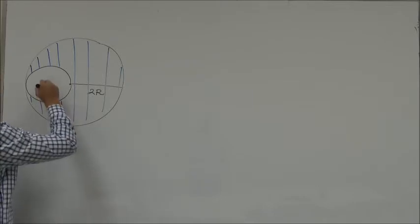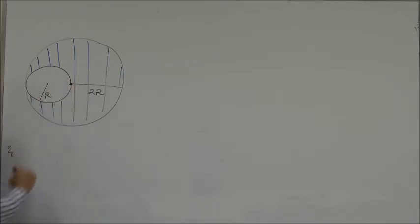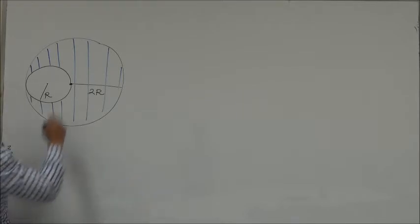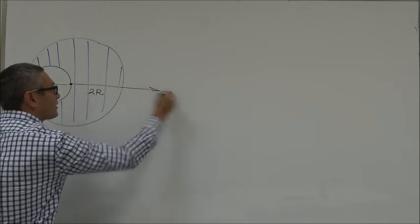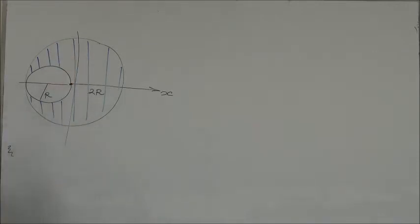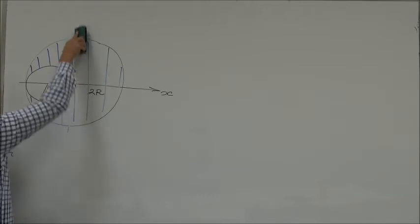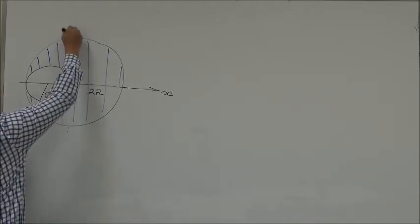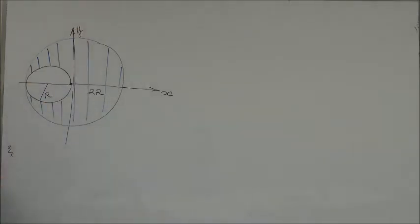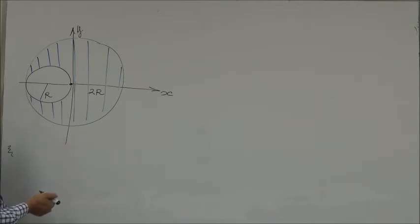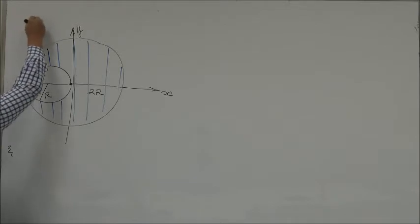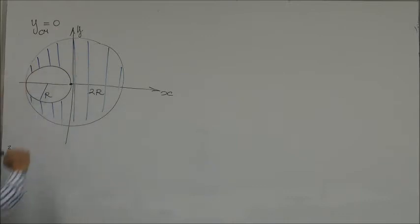The radius of the big circle is 2R, and the radius of the small circle is R. This is the center of the bigger circle. In order to find the center of mass of that blue shaded figure, let's introduce Y and X axes. The Y axis passes through the center of the bigger circle. Clearly, because of the symmetry of the problem, the center of mass of this blue figure has to be along the X axis. In other words, the Y coordinate of the center of mass is equal to zero.